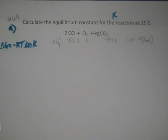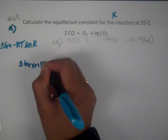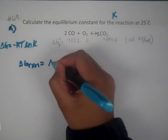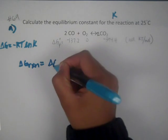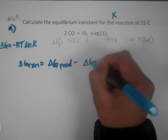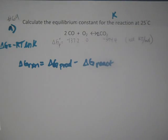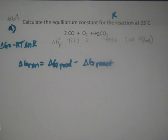Delta G of reaction — remember, anything of reaction is going to be delta G of products minus delta G of reactants. Anything of reaction is products minus reactants. We get delta G of products and reactants from a table in the book.